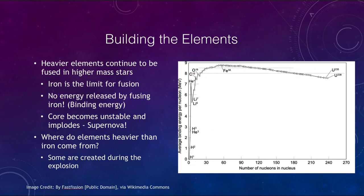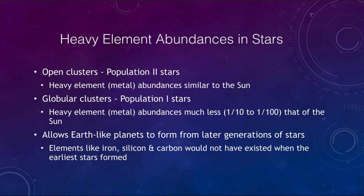So let's take a look at some of these heavy element abundances. We have what we call two different populations of stars. We have population two and population one stars. Now, population one stars are the older stars. So these are stars that are present in globular clusters and they have very low heavy metal abundances. Heavy elements, metals, anything other than hydrogen and helium are much less, one tenth to one one hundredth what we see in the sun.